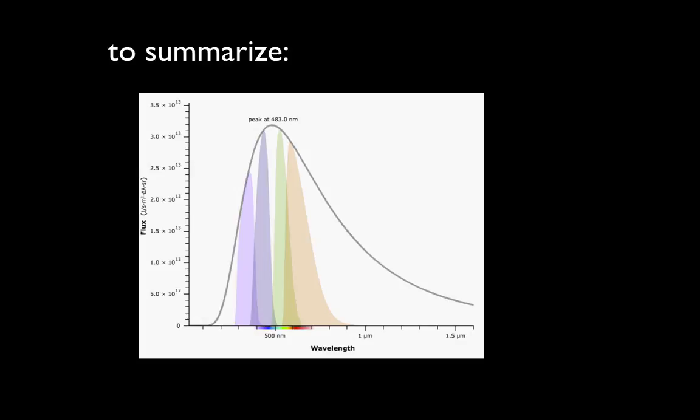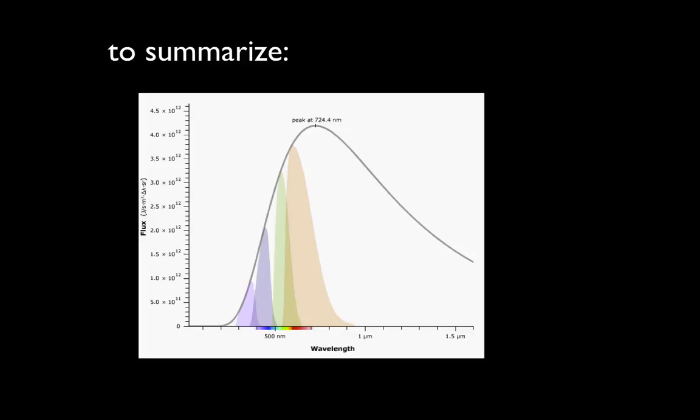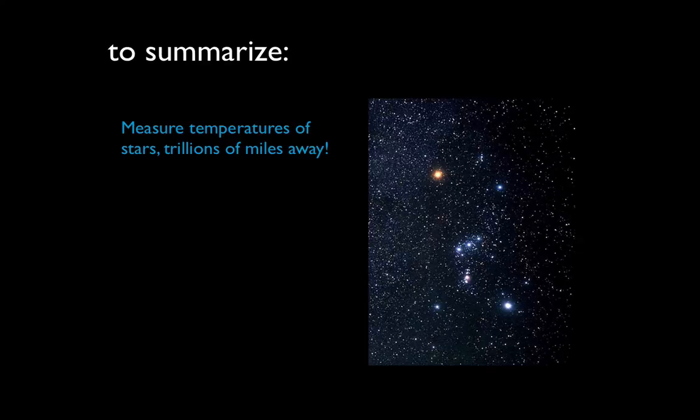In this case, the emission is peaking at around 483 nanometers, and so the temperature is close to 6,000 Kelvin. For this star, the peak has moved a little bit towards the red side, so its temperature must be cooler. It's about 5,000 Kelvin. This star, the peak has further moved, this time into the infrared regime. Its temperature must therefore be cooler, and the temperature is about 4,000 Kelvin. Think about this. This means that we can measure the temperatures of stars that are trillions of miles away. That's pretty amazing.